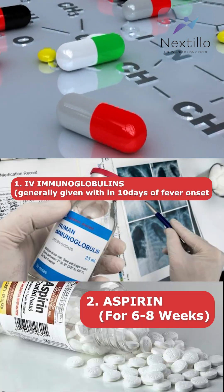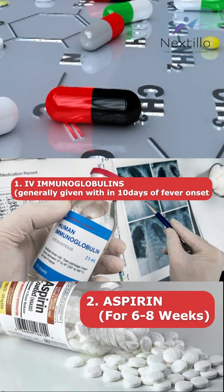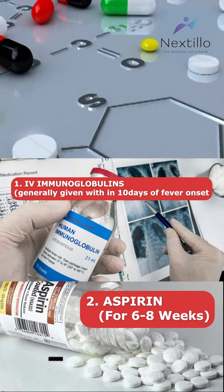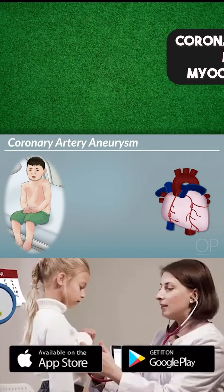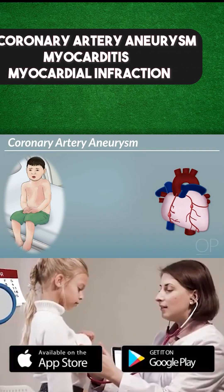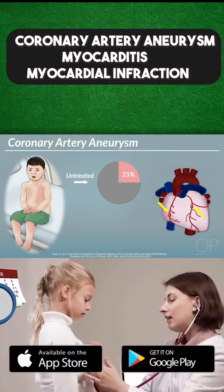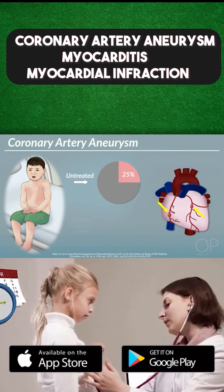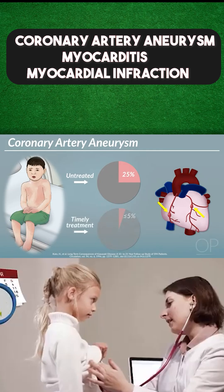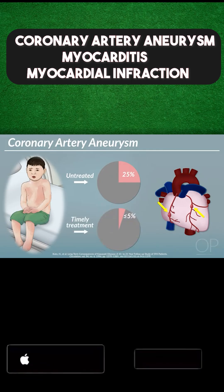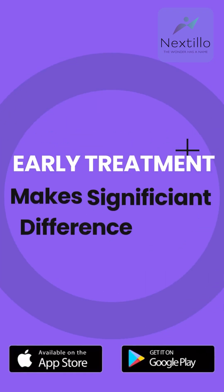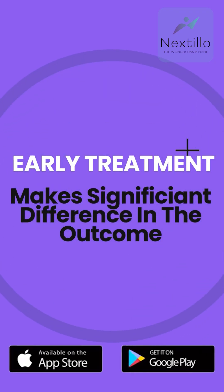For treatment, we give IV immunoglobulins and aspirin. If left untreated, it could lead to coronary artery aneurysm, myocarditis, or even myocardial infarction. Early treatment makes a significant difference in the outcome.